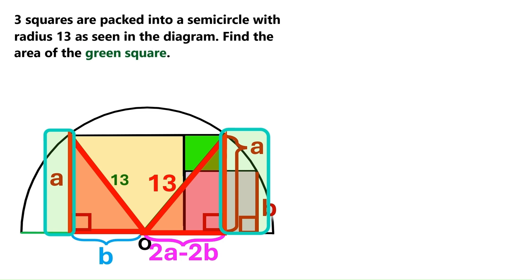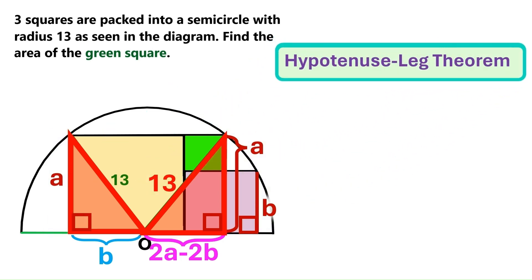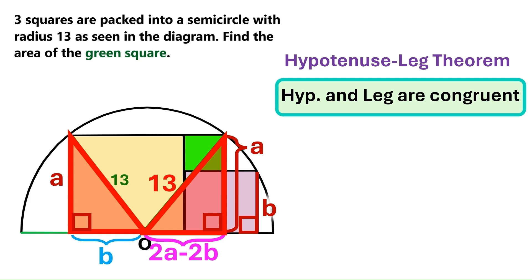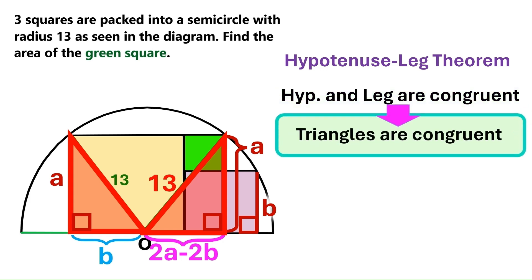One of their legs are identical too. And we've got this hypotenuse leg theorem. And it states that if the hypotenuses and one of the legs of two separate right triangles are identical, then those triangles must be congruent.